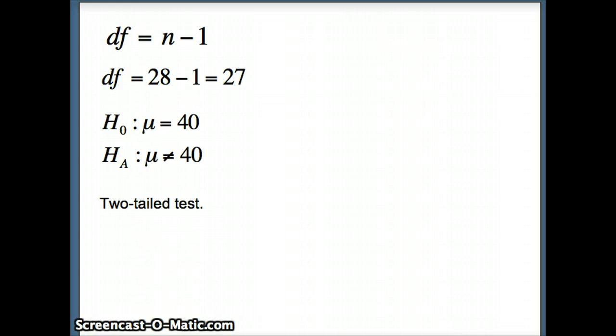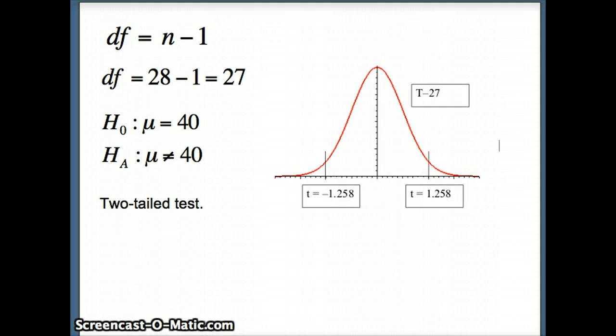Here we have a two-tailed test: μ equals 40 versus μ doesn't equal 40. To find our p-value, we're going to have to go to the extreme right and to the extreme left. Our test statistic t was -1.258. Since it's a two-tailed test, I also have to put on a t of positive 1.258. The p-value will be the sum of the two areas.